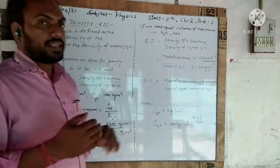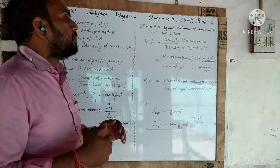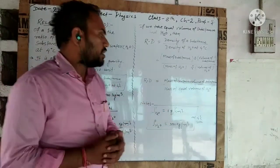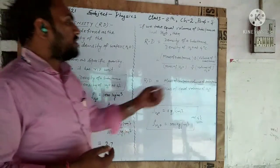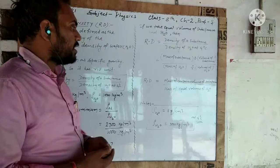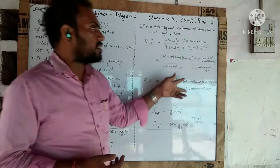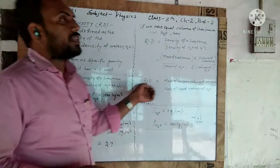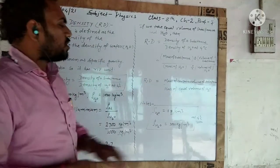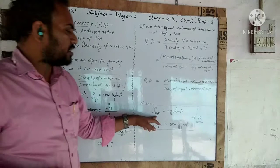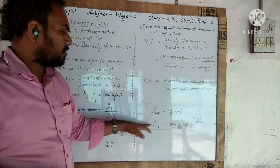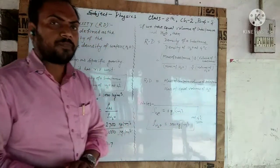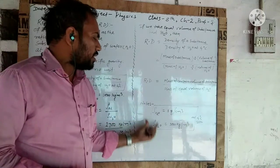For example, if you take five cubic meters of any substance and five cubic meters of water and divide the mass of the substance by the mass of water, you get the relative density of that substance. An important point to note: the density of water is 1 gram per centimeter cube in CGS units and 1000 kg per meter cube in SI units. Always keep this standard value in mind.